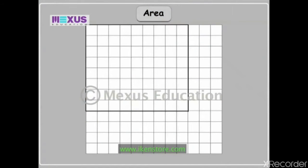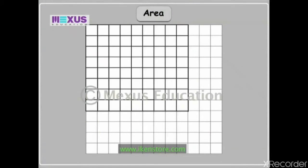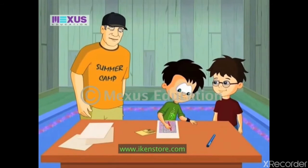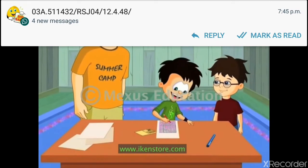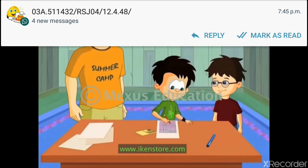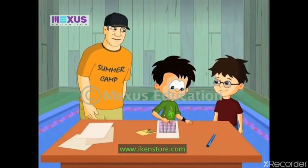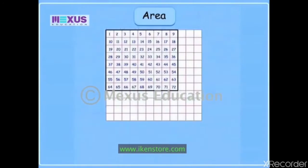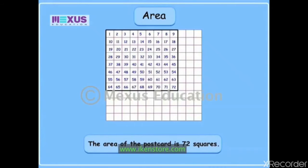Can you count the total number of squares inside the outline of the postcard? This will take ages to count. Just let me know when you are done. Finally done — seventy-two squares. This postcard completely covers up seventy-two of these squares. Can you tell me what this means? That the area of this postcard is seventy-two squares.